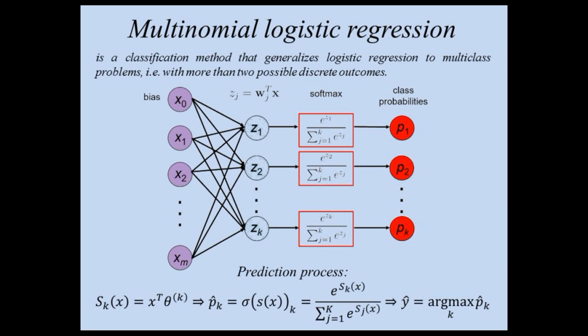In summary, multinomial logistic regression is a powerful tool for classification problems with three or more mutually exclusive classes. By extending binary logistic regression, it enables us to predict multiple outcome categories with ease.